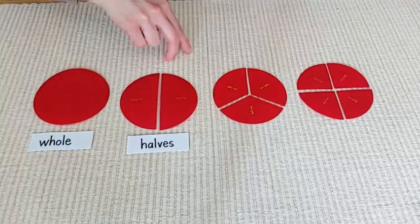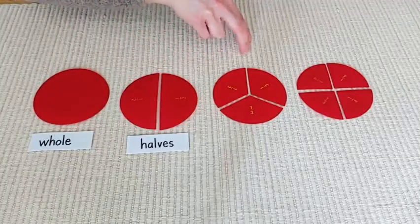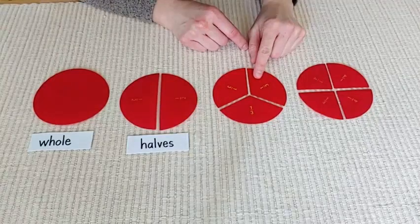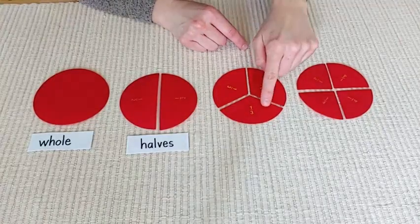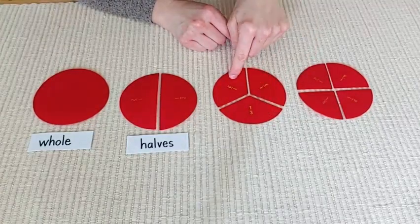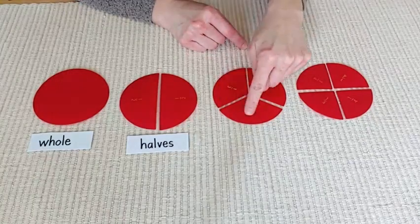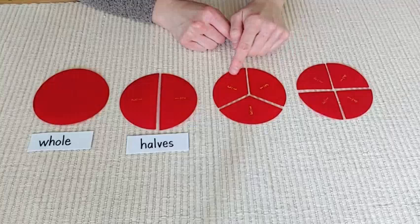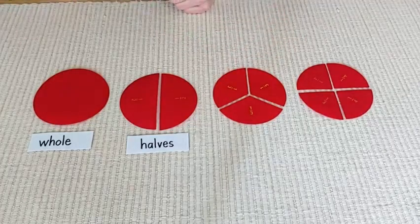And if I keep walking along Fraction Street and I stop to say hello to this neighbor, you'll see here that there are one, two, three parts. It's still one whole circle, but this family is broken into three parts. And we call this family the thirds family.